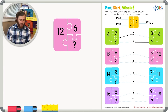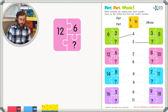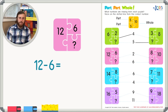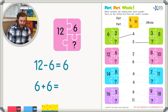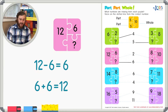We have 12 as our whole number and six as one of the parts. We can use subtraction: 12 minus six is six. To check our work, we add six plus six, and that is in fact 12. So we can go ahead and trace on the dotted line to six.